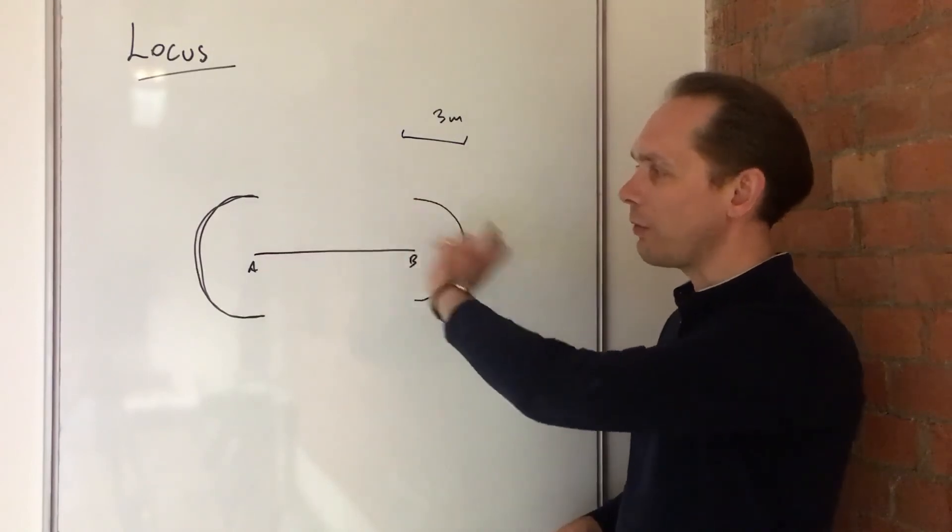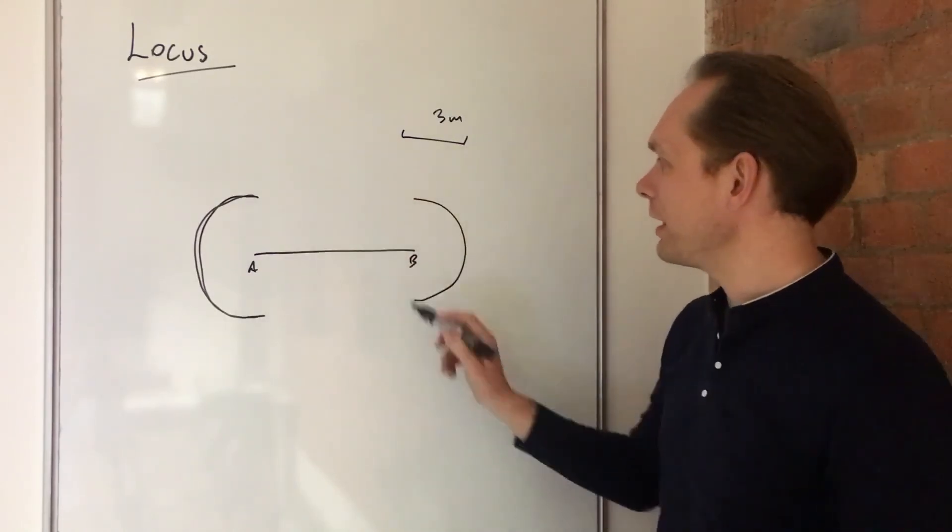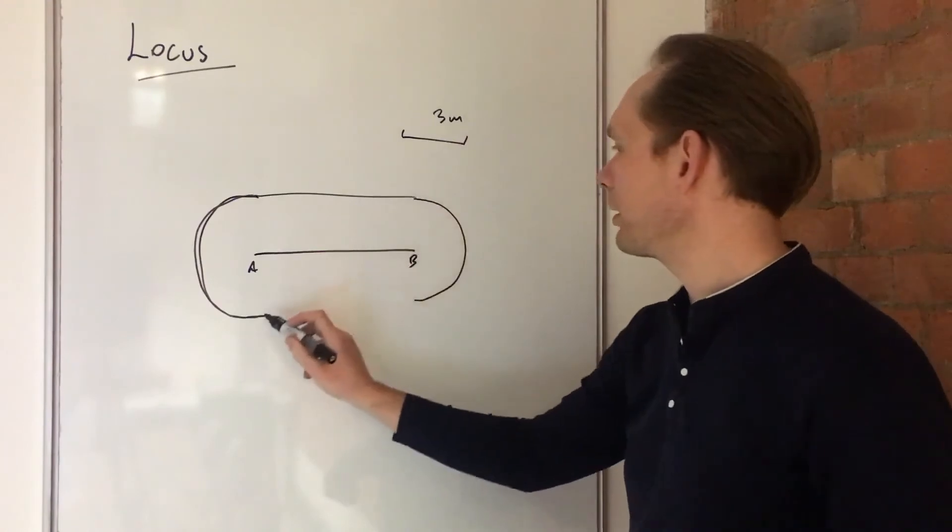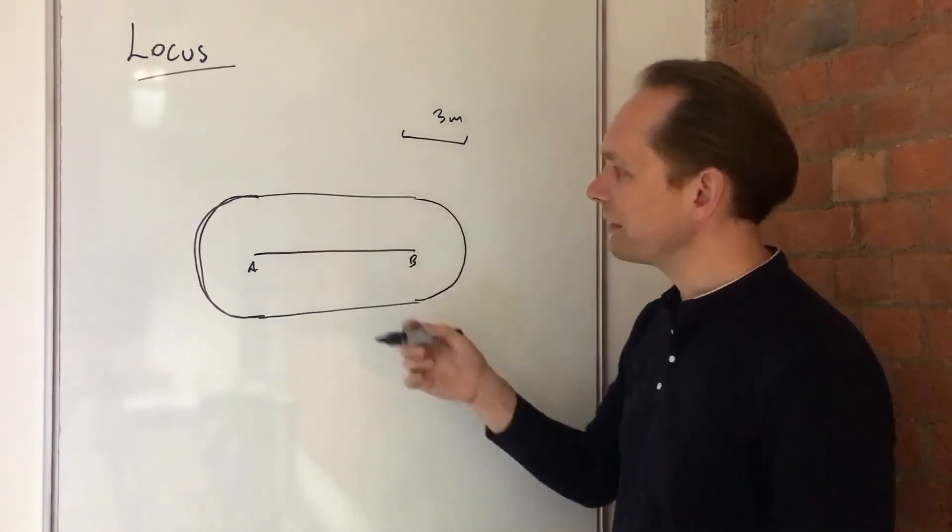So once you've done that with your compasses, you can then construct the line that goes across the top. And you'll see now,